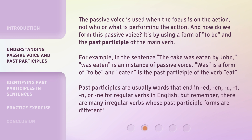Past participles are usually words that end in -ed, -n, -d, -t, or -en for regular verbs in English. But remember, there are many irregular verbs whose past participle forms are different.